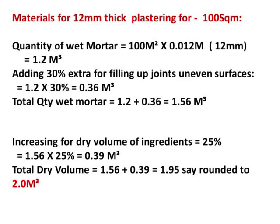The overall wet mortar quantity is 1.2 plus 0.36, which equals 1.56 cubic meters. Now increasing for the dry volume of ingredients, another 25% is added to 1.56 cubic meters, which is 0.39 cubic meters. The total dry volume is 1.56 plus 0.39 equals 1.95 cubic meters, rounded off to 2 cubic meters.